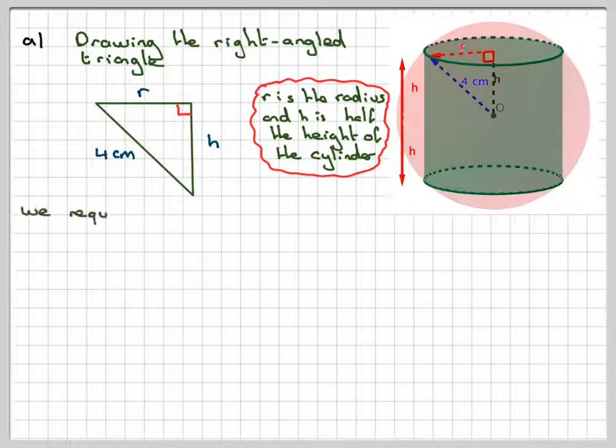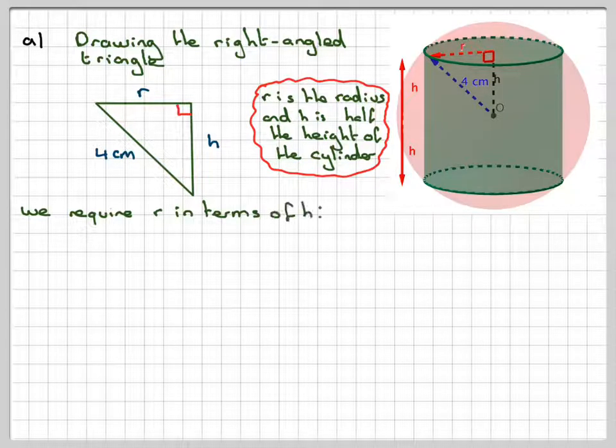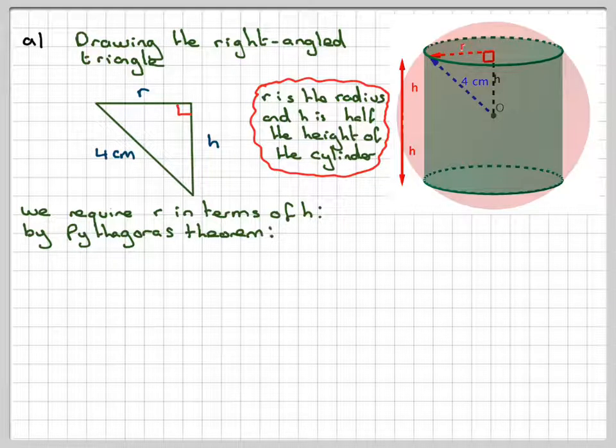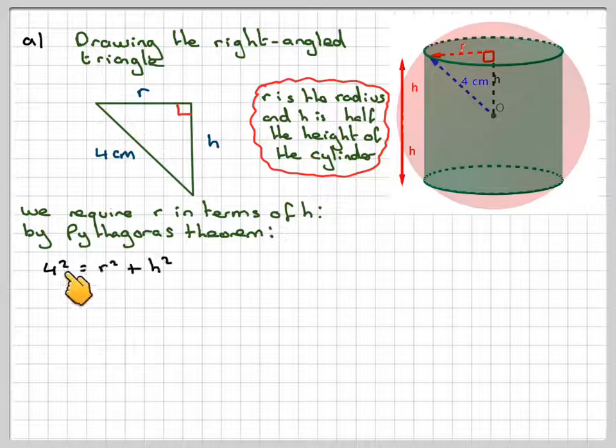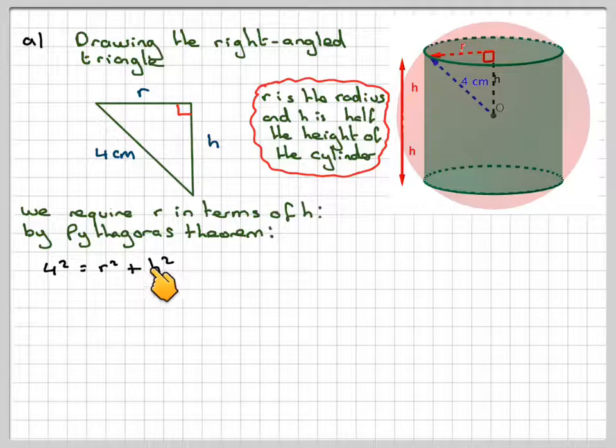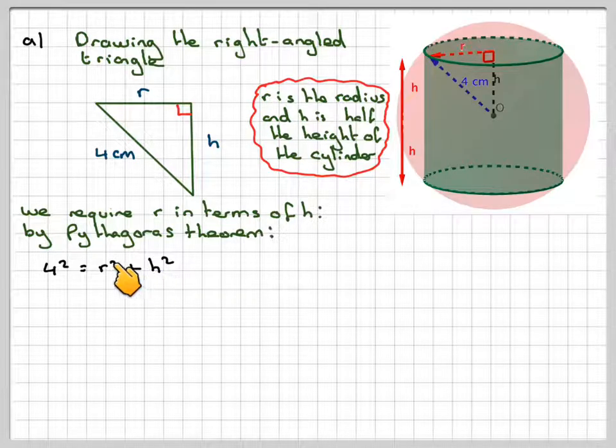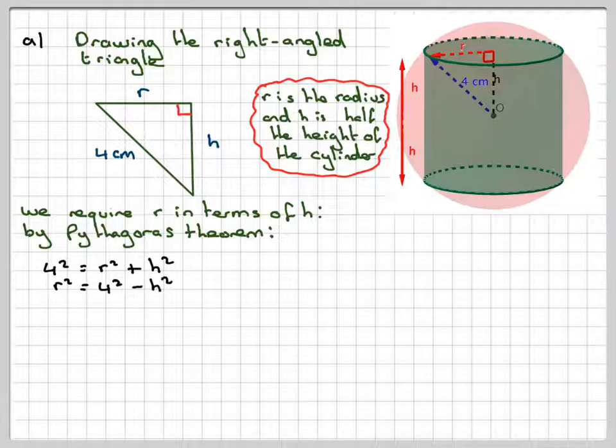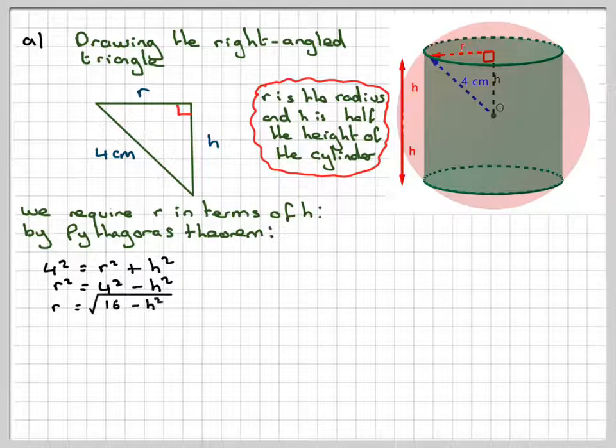So using Pythagoras' theorem, writing r in terms of h, we can say by Pythagoras' theorem that 4 squared is going to be equal to r squared plus h squared. And therefore, we can rearrange that for r like we're asked to do. So r squared will be 4 squared minus h squared. And therefore, r will be equal to the square root of 16 minus h squared.